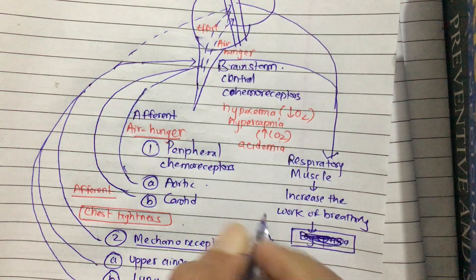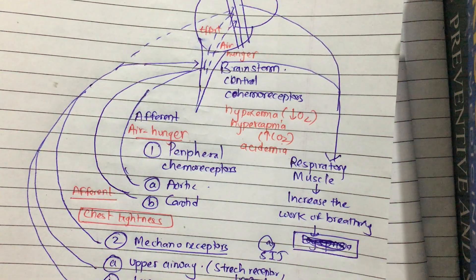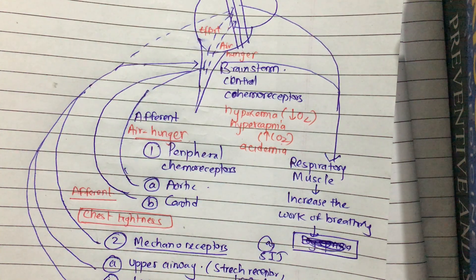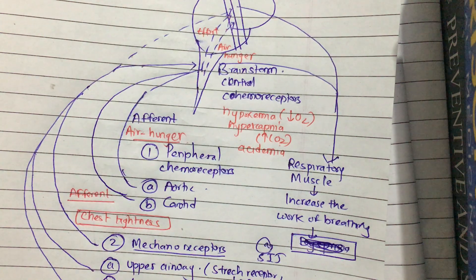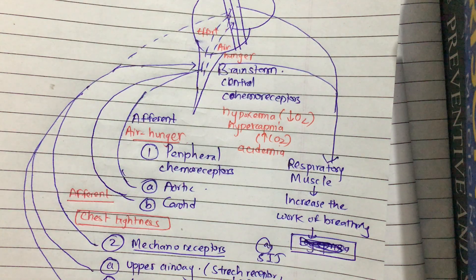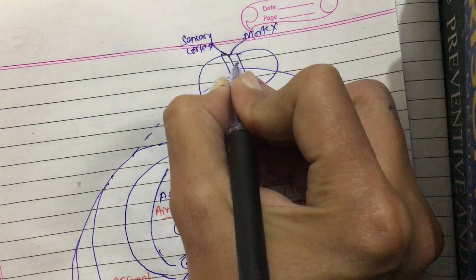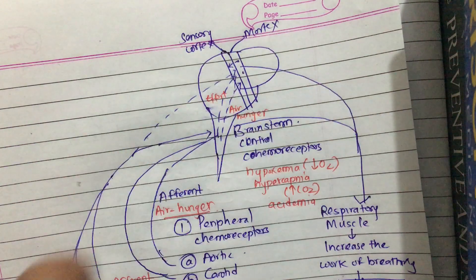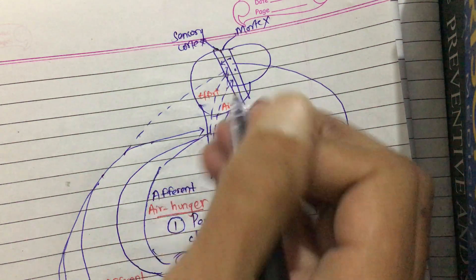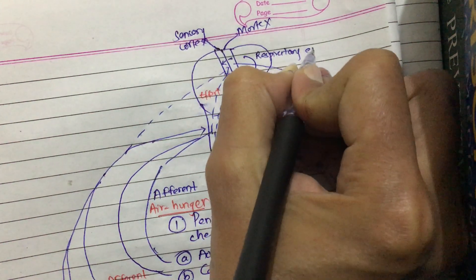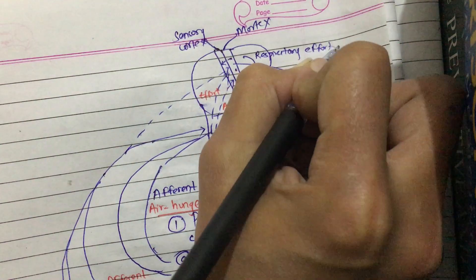The motor cortex responds by activating the respiratory muscles and increasing the work of breathing, which leads to dyspnea. In normal conditions, if the efferent and afferent fiber pathways are balanced, there is no dyspnea. But when there is a mismatch in the efferent and afferent pathways, there is dyspnea. The motor cortex also sends some fibers to the sensory cortex, making us aware of the increased respiratory effort.